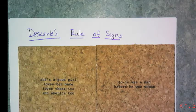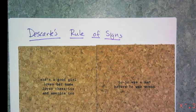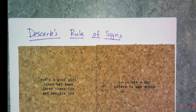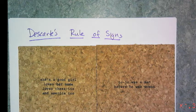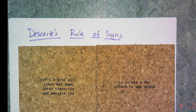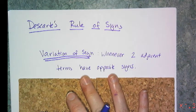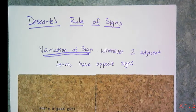Now we come to the meh theorem of the polynomial theorems, and that's Descartes' rule of signs. I call it a meh theorem primarily because graphing calculators have totally rendered this useless, and sometimes it's super helpful, and sometimes it's not really that helpful at all. First off, I have to define something: a variation of sign, because Descartes' rule of signs is dependent on this concept.